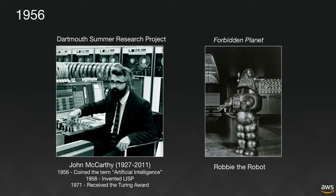Funny enough, at about the same time as that summer project, the first movie featuring a robot as a major character — called Forbidden Planet, a true sci-fi classic — came out. I would like to believe those scientists saw the movie and it influenced them in defining artificial intelligence, but I'm afraid this is just wishful thinking. Still, an interesting coincidence.